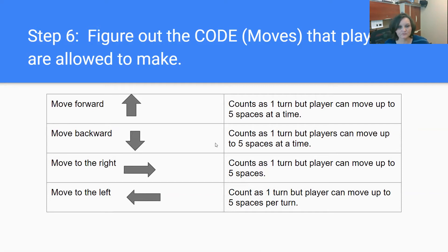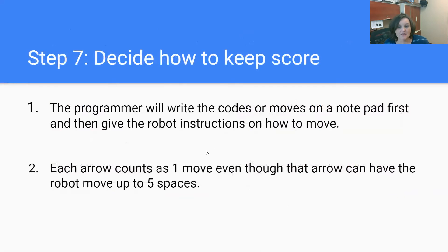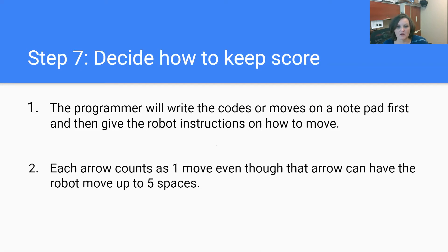Then you need to decide how to keep score. We decided that the programmer would write down the arrows or codes on a notepad first and then give the robot instructions on how to move. At the end of the game, they would count up the arrows to see how many codes they had to use to get the character to the end of the game.